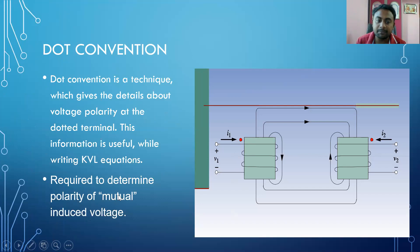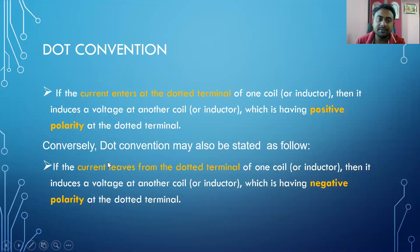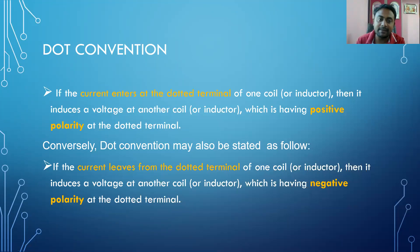The major purpose of the dot convention is to determine the polarity of the mutual induced voltage. If you know the M sign, only then we can say what is the polarity of the mutual induced voltage. If you know both the self-induced voltage and the mutual induced voltage, we can write the KVL equations. So for that, everyone follows the same convention.